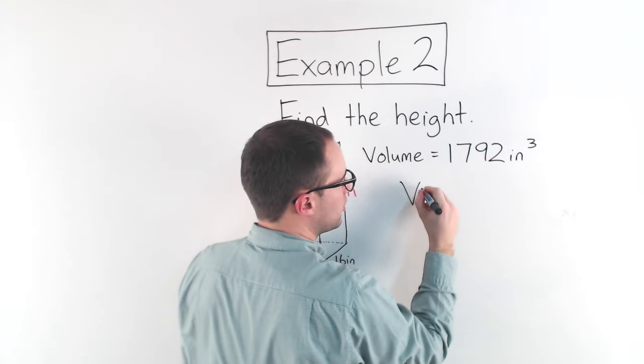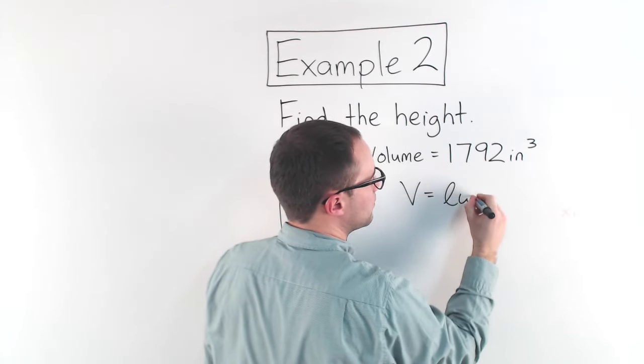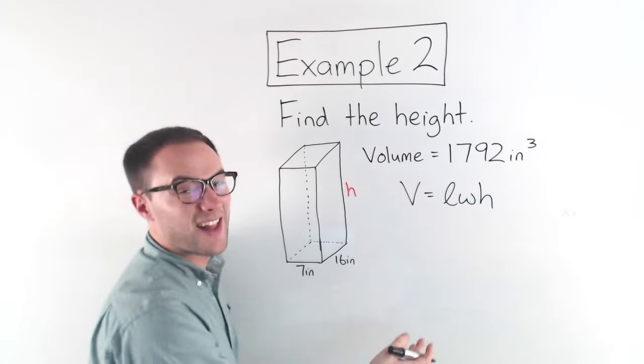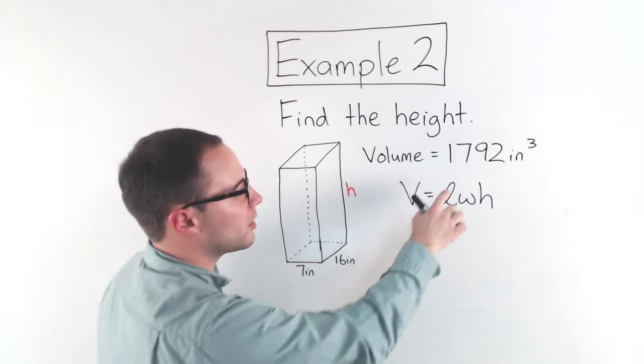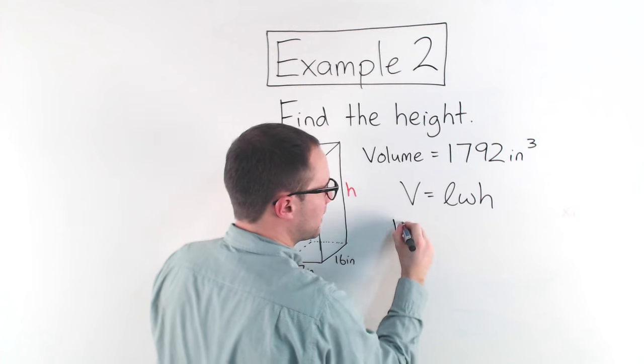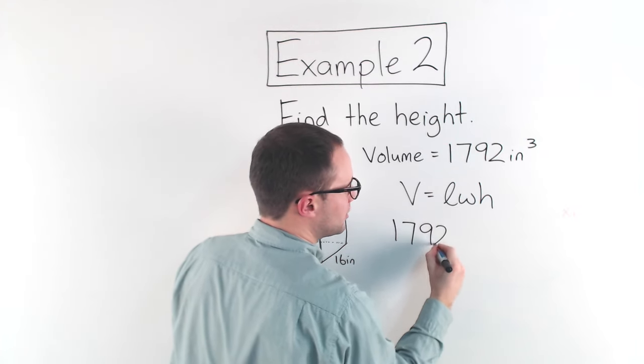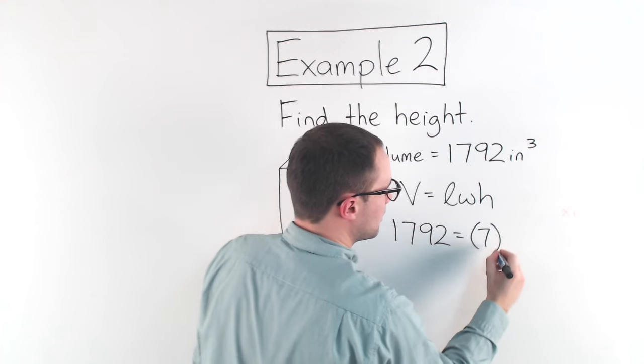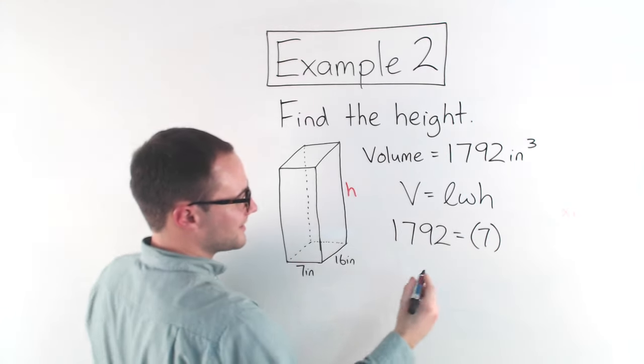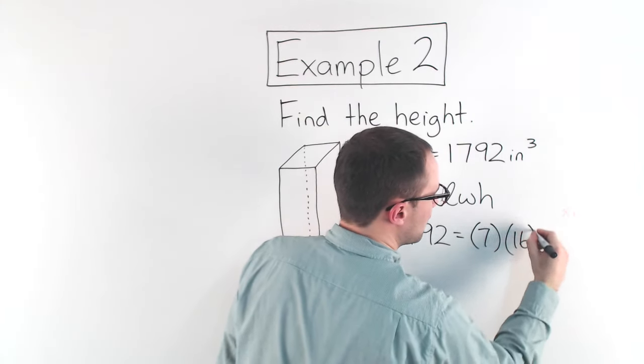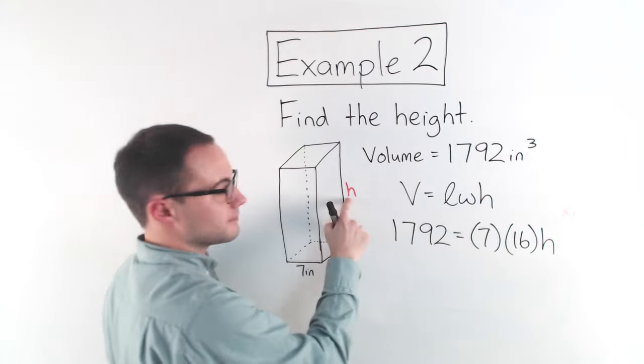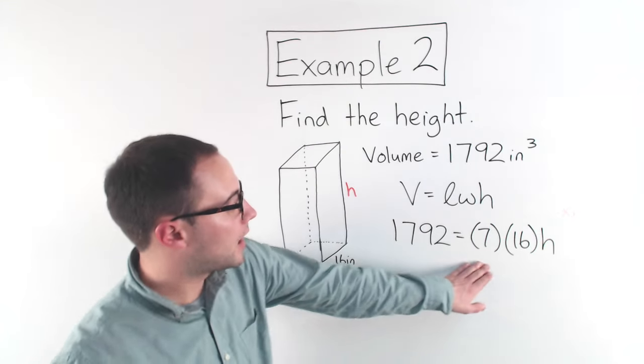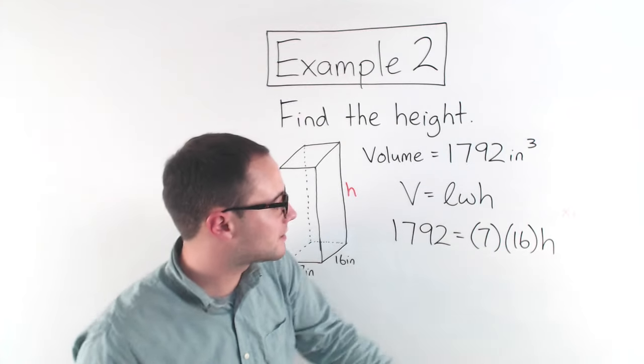So we know that the formula is length times width times height will give us the volume. Volume equals length times width times height. Now let's substitute in the things we know. Well, we know the volume. So that's 1,792. We know the length, 7 inches. We know the width, 16 inches. We don't know the height. That's our unknown. So here's our equation. We're going to solve for h.